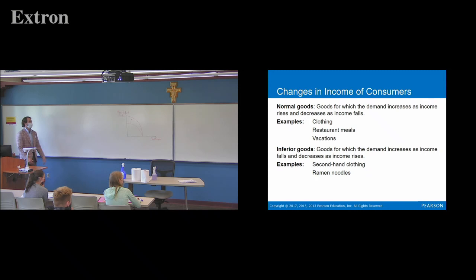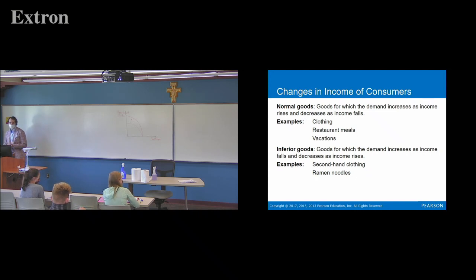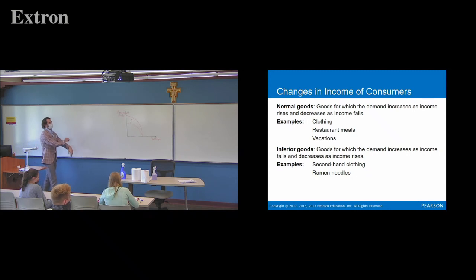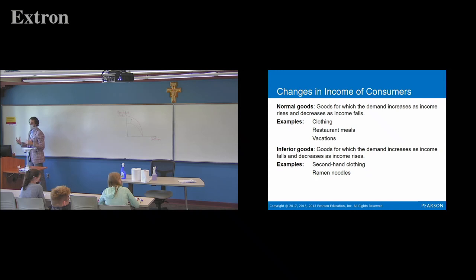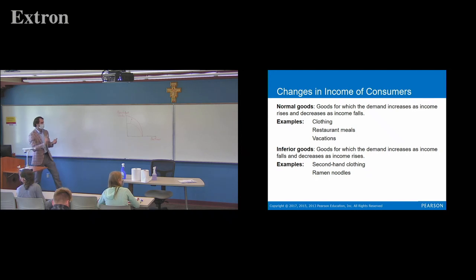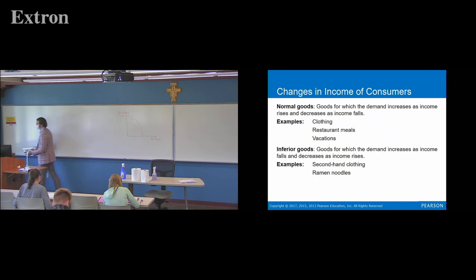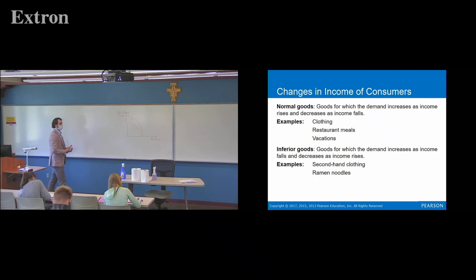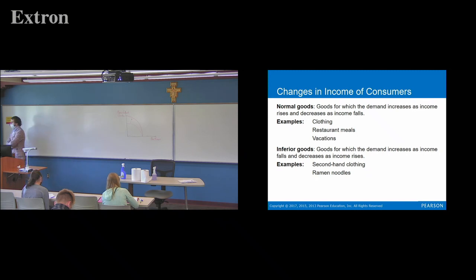Next: changes in income. There are two types of goods. The first are normal goods — pretty much every good out there. Demand increases as people's income rises. The more money they have to spend, the more they're willing to buy normal goods — things like new clothes, restaurants, vacations. If there's a recession and they lose their job, their demand is going to decrease for those goods because they have less money to spend.